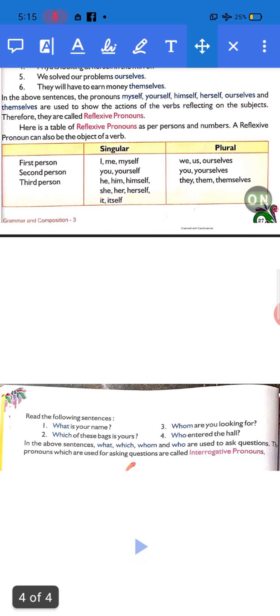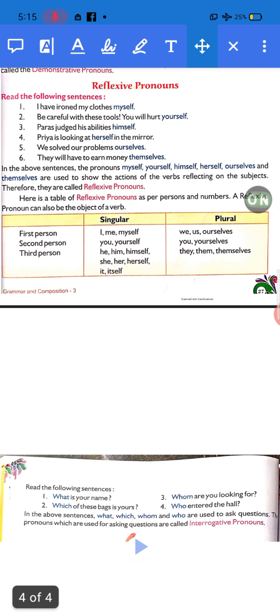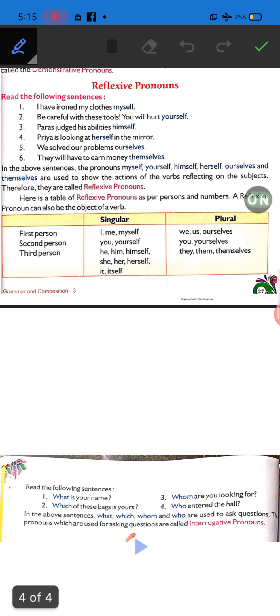Next sentence: Be careful with these tools, you will hurt yourself. With these tools, be careful or you will hurt yourself. So the action word reflects back, and the subject is also pointed out. Wherever you use 'self' with it, like myself, yourself, himself, herself.